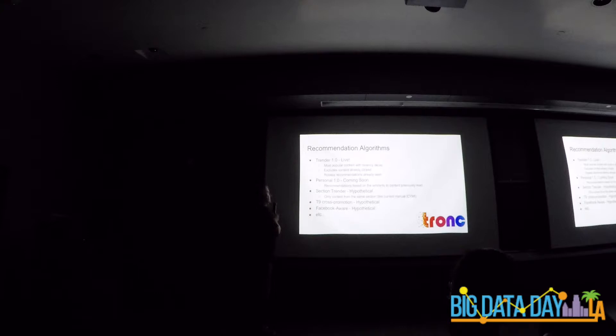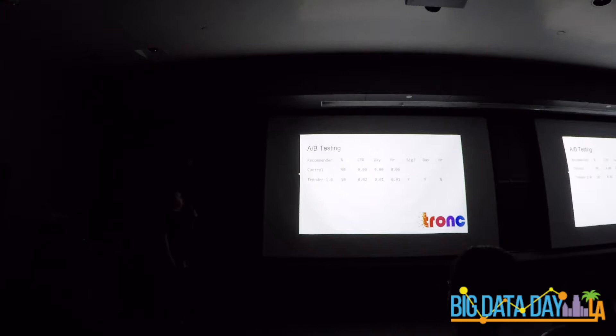We ran for a while a section-based trending algorithm. So what's the most popular content in this section? Recently stopped running it because it didn't show a significant improvement. So hypothetically, in the future, we could do cross-promotion. If you read an article about Hollywood on the Chicago Tribune, maybe we'll recommend you some articles from the LA Times and vice versa. Maybe we do things not necessarily Facebook-specific but social network-aware. So we can run any number of algorithms simultaneously and benchmark how they do. The basic idea is we're constantly A-B testing and there's always some control that we are comparing the latest algorithms to. The traffic is evenly divided among them.